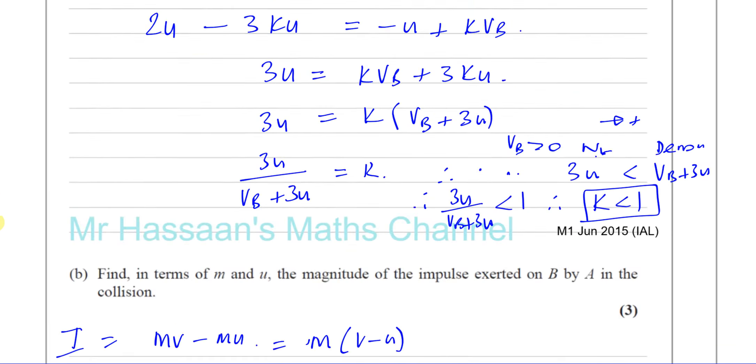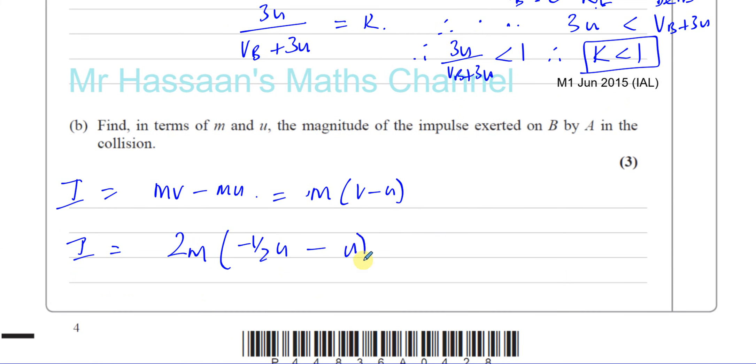So that's going to be 2M times minus 3 over 2U. So you end up with minus 3MU. Therefore, the magnitude, it's asking for the magnitude,